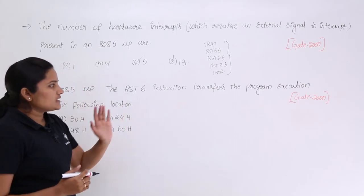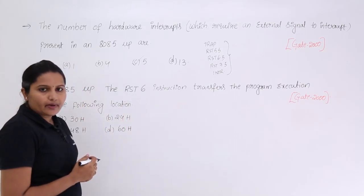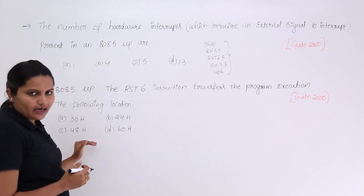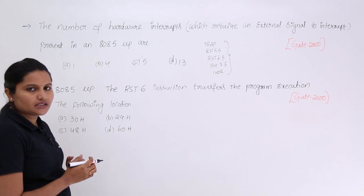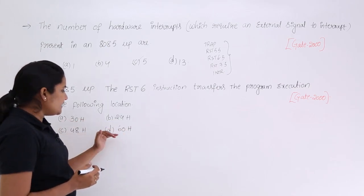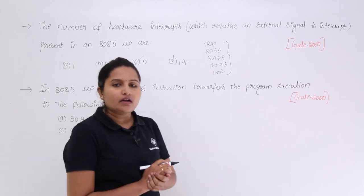RST 6 instruction in 8085 microprocessor, if it is executed then it will skip to which location they are asking. They given 4 locations that is 30H, 24H, 48H and 60H.